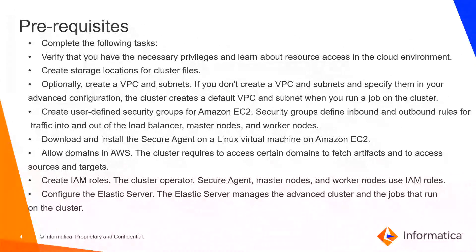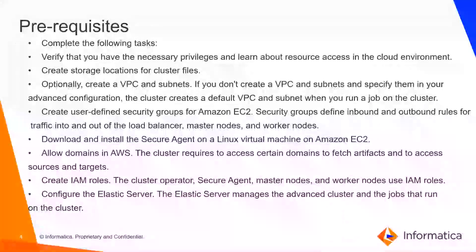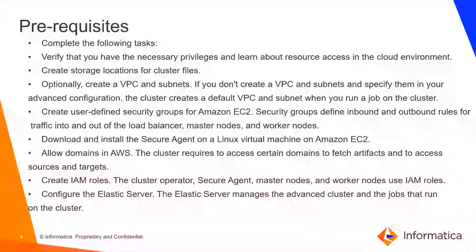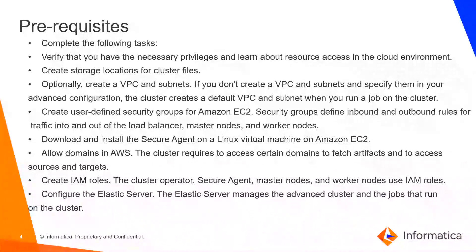I'll show the prerequisites and minimum requirements needed for installing the secure agent when you are running mappings in advanced mode. Allow domains in AWS as we need to fetch artifacts like images from repositories — hence these domains need to be whitelisted. Next, create IAM roles. We need to set up IAM roles, some of which are: cluster operator role, secure agent role, master nodes, and worker nodes.